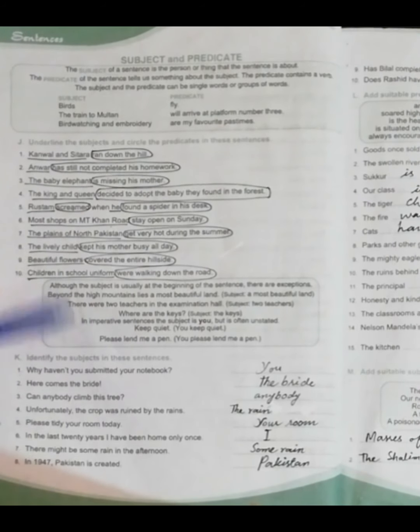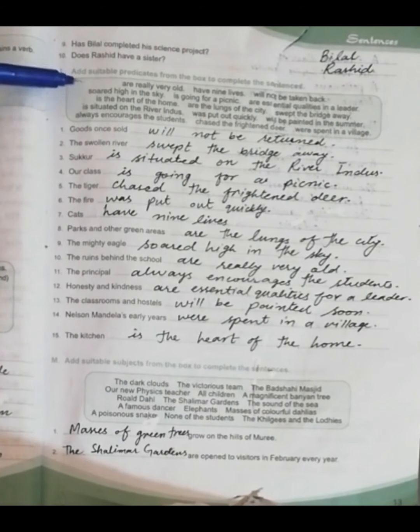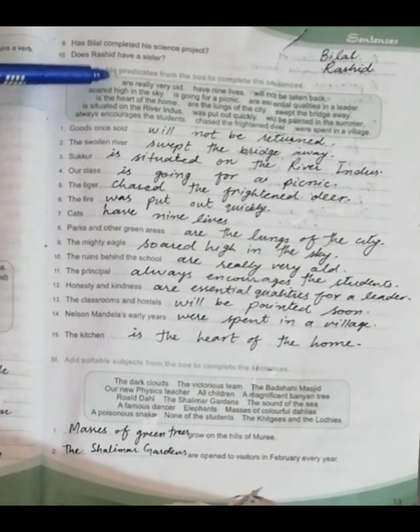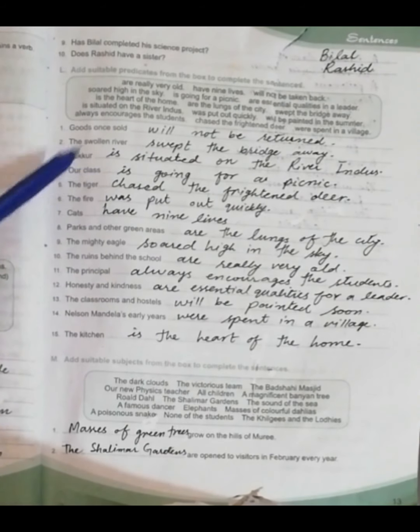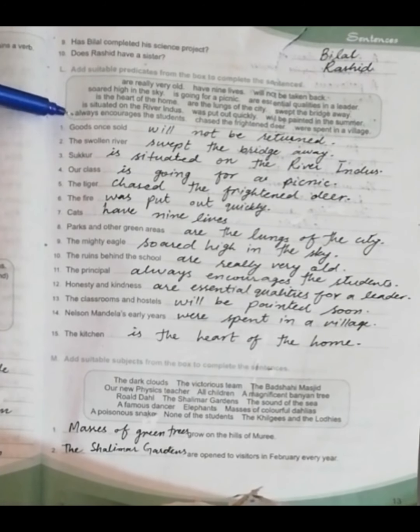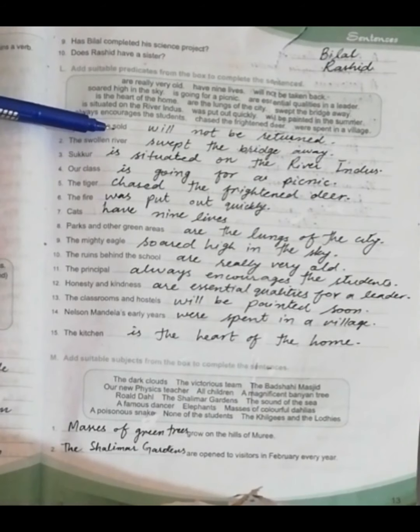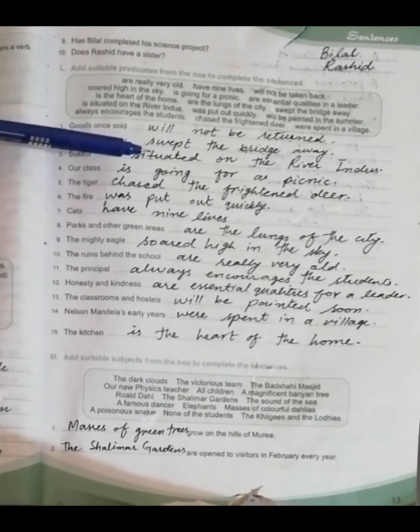You can read them on your own. The next activity that we have is add suitable predicates from the box to complete the sentences. So in the box we have a lot of predicates and I have written all the suitable predicates after the subject. So let's read some of them. The first one is 'Goods once sold will not be returned.' Next one is 'The swollen river swept the bridge away.' You can add different predicates also but they must be correct grammatically.